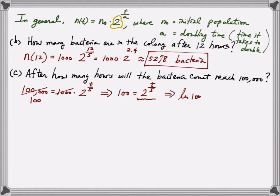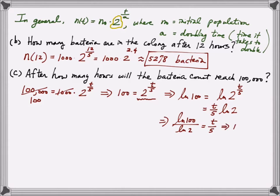Taking natural log of both sides: ln(100) equals ln of 2 raised to T over 5. Bring the exponent T over 5 to the front: T over 5 times ln(2). Since ln(2) is a constant, divide both sides by ln(2) to get ln(100) divided by ln(2) equals T over 5. Multiply both sides by 5, giving the final answer: T equals 5 times ln(100) divided by ln(2). Computing this on a calculator gives approximately 33.22 hours.